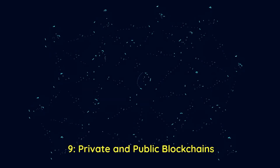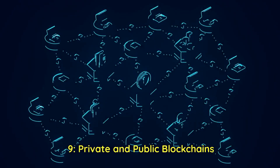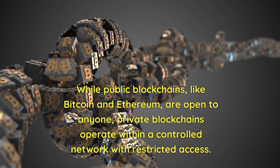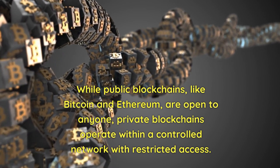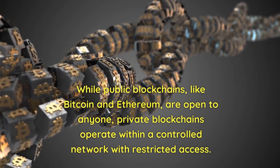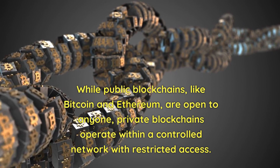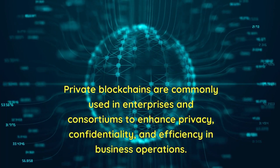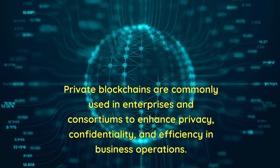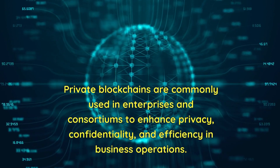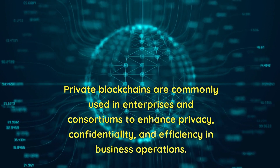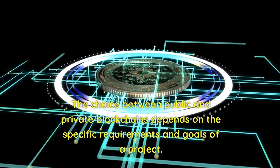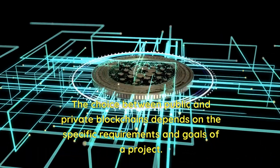Nine: private and public blockchains. While public blockchains like Bitcoin and Ethereum are open to anyone, private blockchains operate within a controlled network with restricted access. Private blockchains are commonly used in enterprises and consortiums to enhance privacy, confidentiality, and efficiency in business operations. The choice between public and private blockchains depends on the specific requirements and goals of a project.